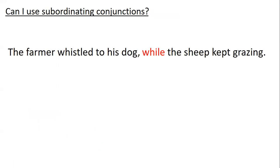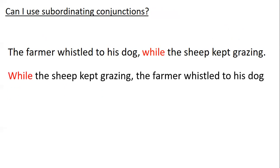Today we're looking at subordinating conjunctions. Subordinating conjunctions are used in complex sentences — that's what they do, they make complex sentences. This first sentence: 'The farmer whistled to his dog while the sheep kept grazing' is a complex sentence, and 'while' is a subordinating conjunction. You can take the two parts and put them in a different order: 'While the sheep kept grazing, the farmer whistled to his dog.' If you can do that, you know it's a complex sentence.